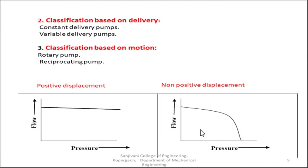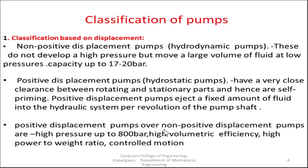Non-positive displacement pumps are usually found in the turbo machinery lab. All pumps there are hydrodynamic type. But in an industrial fluid power lab, all the pumps are hydrostatic type — these have high pressure up to 800 bar, high volumetric efficiency, high power-to-weight ratio, and more precise control.